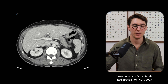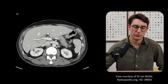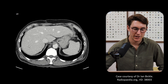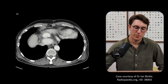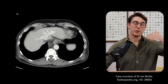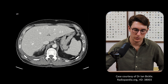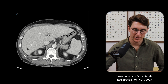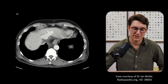Heading superiorly, getting to the level of the right portal vein, we know that above that this segment is all segment seven. Posterior to the right hepatic vein and superior to the right portal vein is our segment seven — all the way down until that level. And as we go up, this is all segment seven.